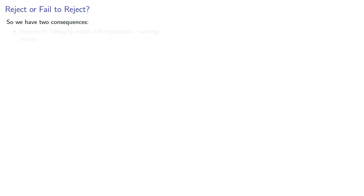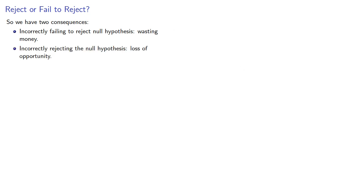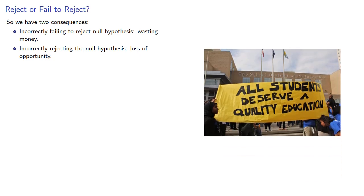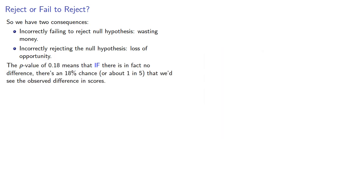So now we have two consequences. Incorrectly failing to reject the null hypothesis means we're wasting money. Incorrectly rejecting the null hypothesis means a loss of opportunity. The p-value of 0.18 means that if there is in fact no difference, there's an 18% chance — about 1 in 5 — that we'd see the observed difference in scores. So it's reasonably likely to happen even if there is no difference between the groups.